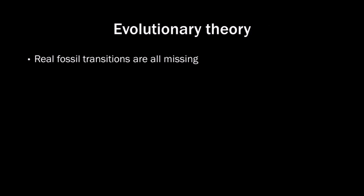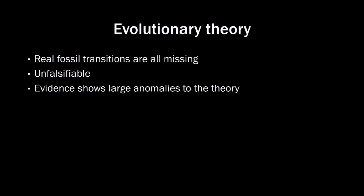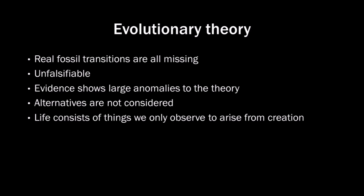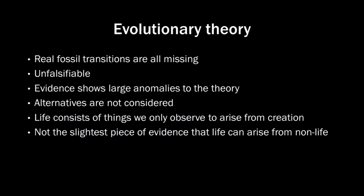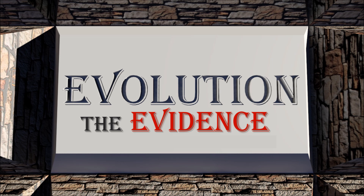Let's summarize: real fossil transitions are all missing; evolutionary theory is unfalsifiable; the evidence shows large anomalies to the theory; alternatives are not considered; life consists of things we only observe to arise from creation; and there isn't the slightest piece of evidence that life can arise from non-life. We have reached the end of the series Evolution: the Evidence. Thank you for watching and see you later.